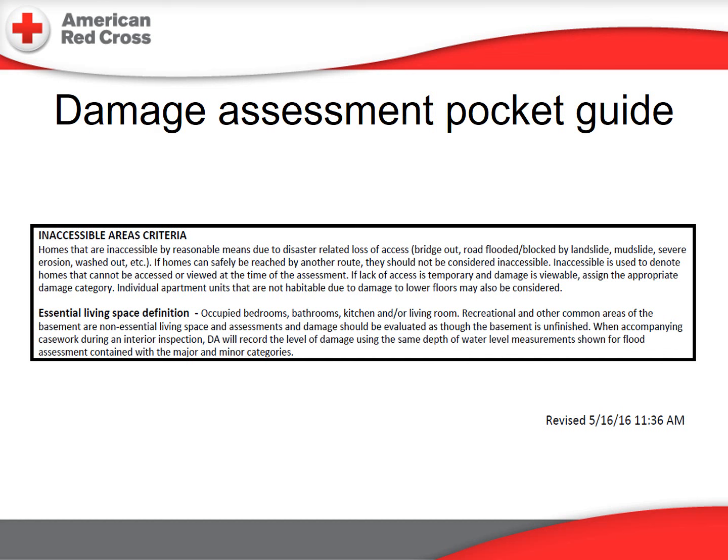Even on the preliminary damage assessment, knowing how to classify the damage you observe in the field is imperative. The pocket guide is the document that defines how we classify the damaged dwelling. This guide was revised and reissued on May 16, 2016, and is now substantially equivalent to the FEMA damage guidelines. The ARC made only cosmetic modifications from the FEMA policies so that they would align with ARC assistance guidelines.